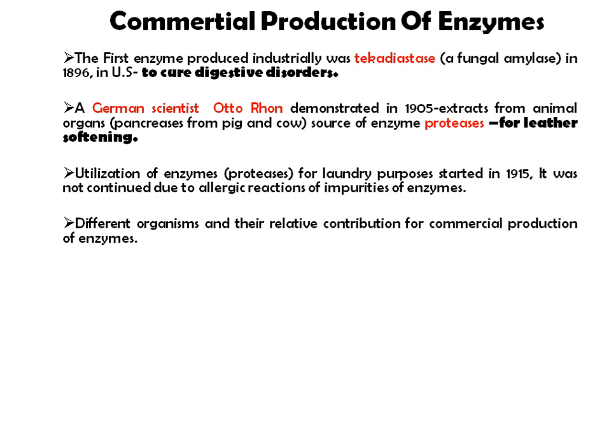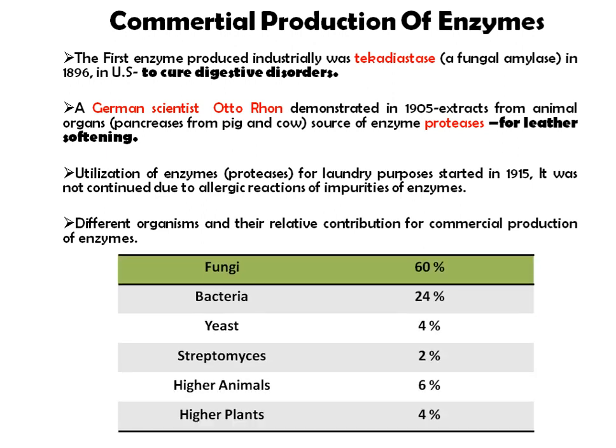Regarding different organisms and their relative contribution to commercial enzyme production: about 60% fungal species are used, then 24% bacteria, 4% yeasts, 2% Streptomyces, 6% higher animals, and 4% higher plants.